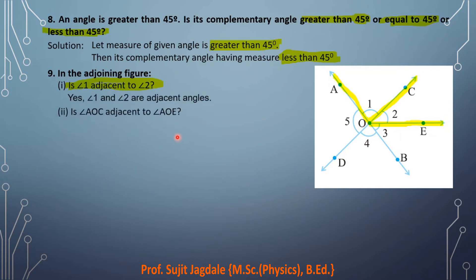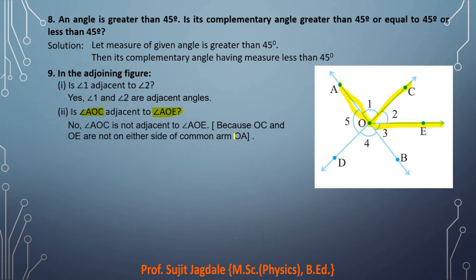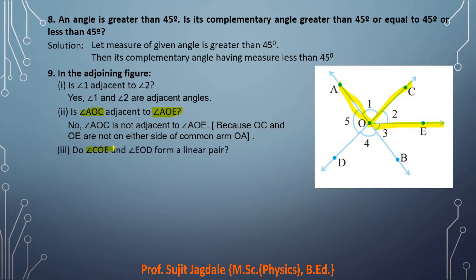Next: is angle AOC adjacent to angle AOE? These two are not adjacent, because the non-common arms OC and OE are both present on the same side of the common arm AO — not on either side. So the condition for adjacent angles is not satisfied.